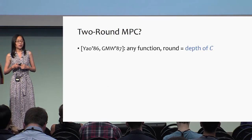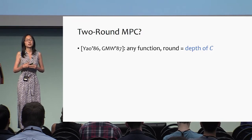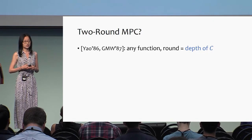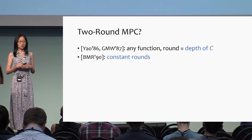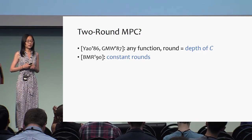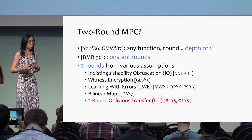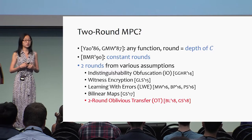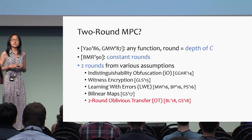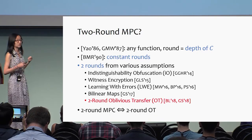Let's briefly look at the literature. Back in the 80s, Goldreich, Micali, and Wigderson gave an MPC protocol that can compute any function, with round complexity equal to the depth of the circuit. Later, Beaver, Micali, and Rogaway gave a constant-round MPC protocol independent of the circuit depth. In terms of two-round MPC, we now know constructions from various assumptions, especially recent work constructing two-round MPC from two-round oblivious transfer. Since two-round MPC also implies two-round OT, they are equivalent — a minimal assumption.